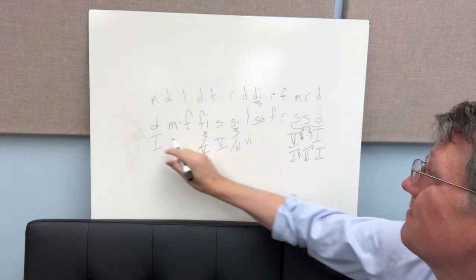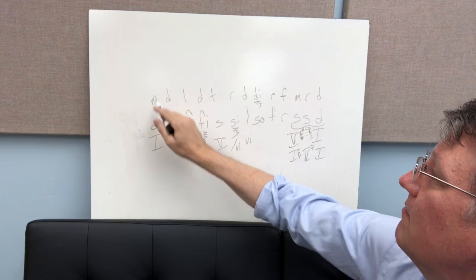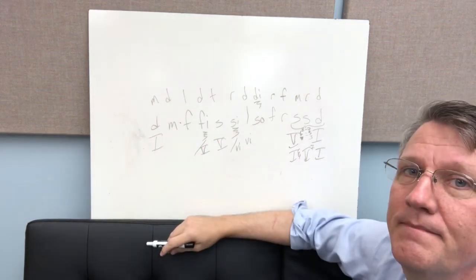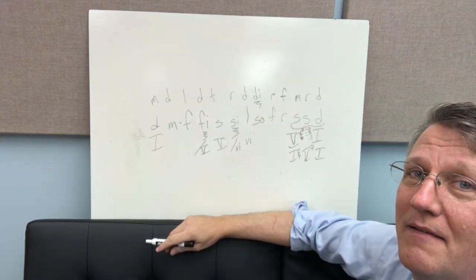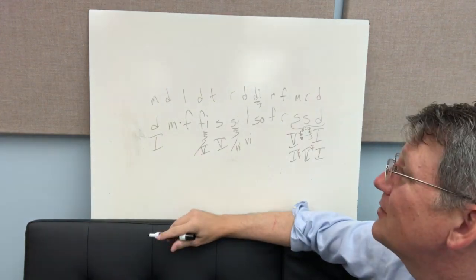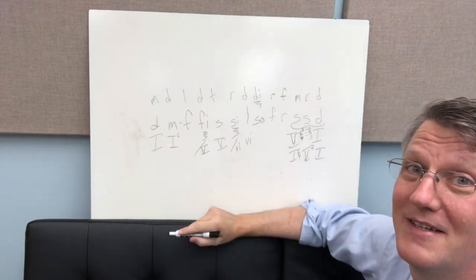Alright, so we have one. Look at the next thing we have: mi, do and do, mi. What is that? That's a voice exchange. We're pretty much guaranteed that this is going to be a one-six chord.